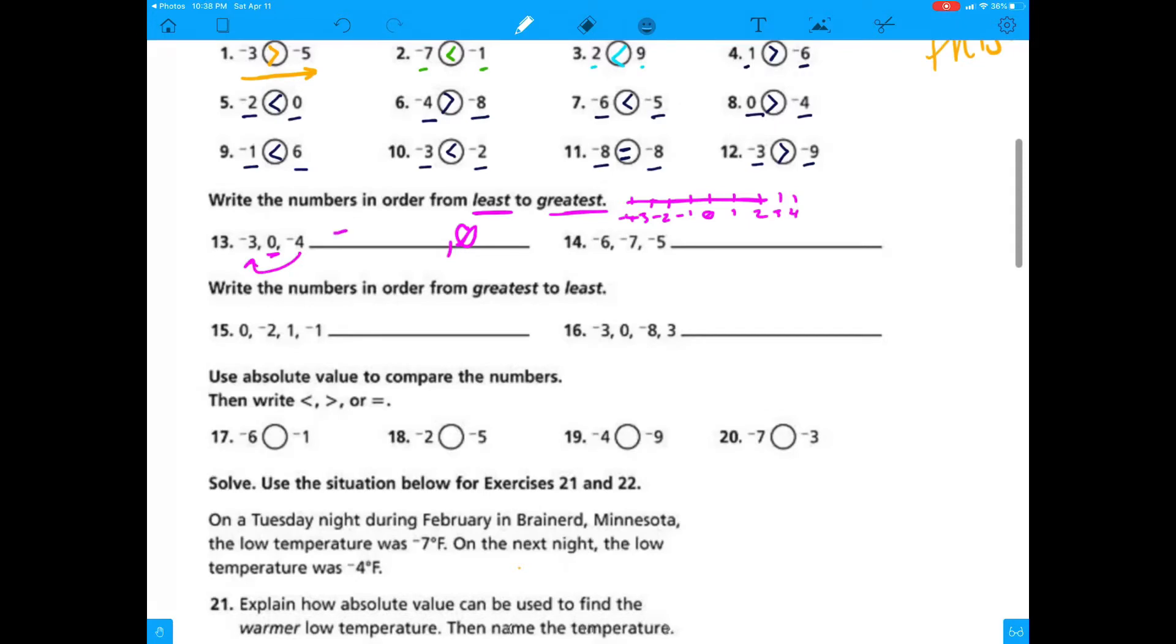Now I'm thinking, what order would I find these in? Yep, negative 4 and then negative 3 and then 0. That's the smallest number to the greatest number. Again, we're just changing your thinking. We're not forgetting everything we know. We're just adding on to it. For this one, it's negative 7, negative 6, and negative 5. They're getting closer to 0.